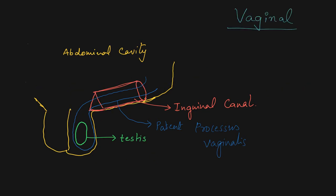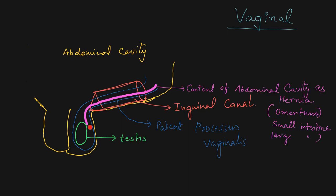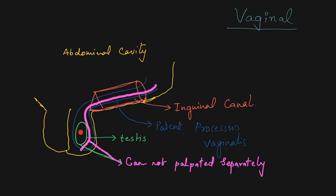If the processus vaginalis remains patent throughout its course and the tunica vaginalis is an open cavity continuous with it, then any content passes through the deep inguinal ring, through the inguinal canal, and reaches up to the base of the scrotum. Here the doctor cannot palpate the testes separately from the content of the hernia — so that is called the vaginal type of hernia.